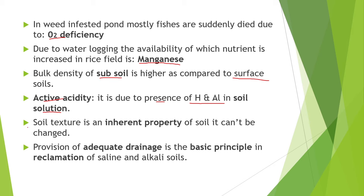Next point is soil texture. Soil texture is an inherent property of soil — it cannot be changed. Soil texture includes silt, sand and clay. The provision of adequate drainage is the basic principle in reclamation of saline and alkaline soil.